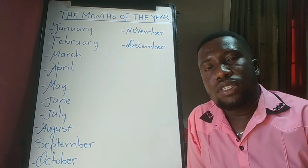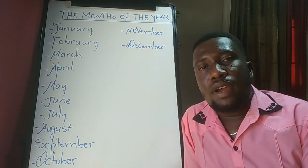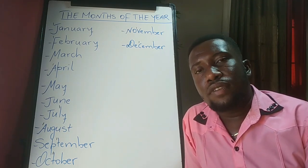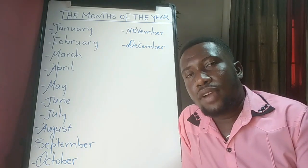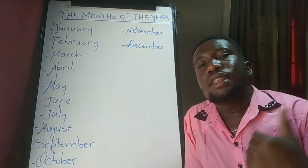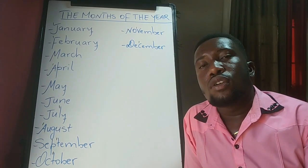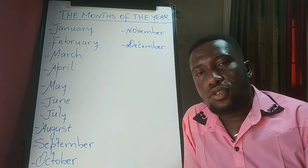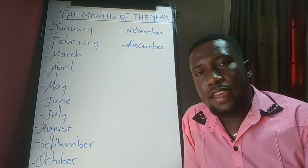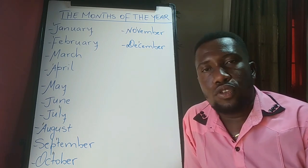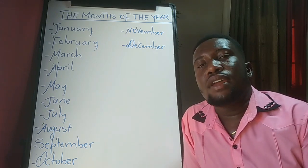Now, note that months and days — when you write them inside a sentence, wherever they appear in a sentence — whether at the beginning, middle, or end — you must always capitalize them. For example, if you write 'Monday' in English, you write it with a capital M. If you write 'January,' you write it with a capital J.